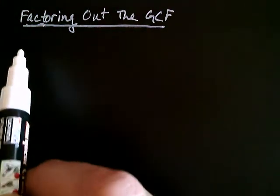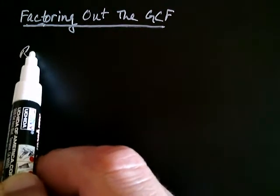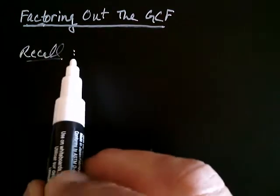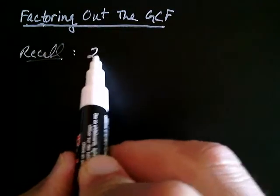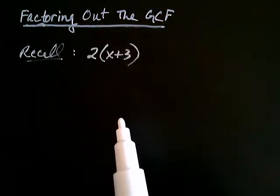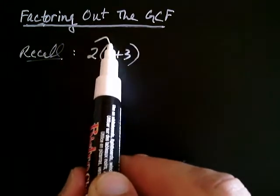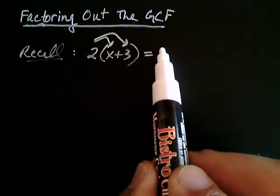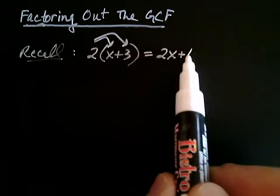Okay, so let's recall that if you take 2 and you multiply by x plus 3, what you do with the 2 is you distribute that. So the 2 gets multiplied by the x and the 2 also gets multiplied by the 3, and you get 2x plus 6.